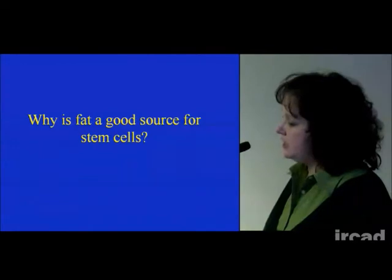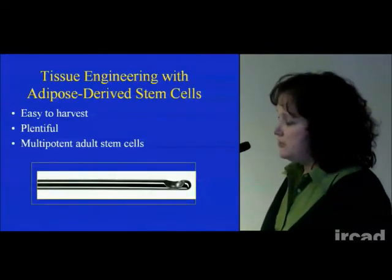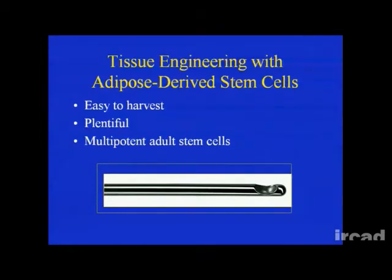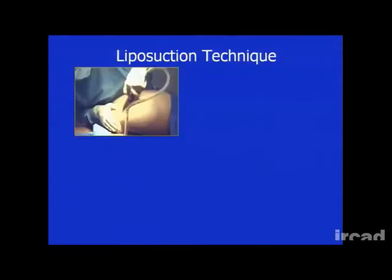Why is fat a good source for stem cells? It's very easy to harvest. Right now in the United States, you can go to your dermatologist and they can extract a syringe full of fat from your abdominal region and inject that fat into your face to temporarily remove wrinkles. But as I mentioned, that fat will resorb after a couple of months. It's very easy to harvest, typically plentiful and expendable tissue, and the stem cells in the fat have been identified.